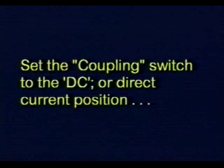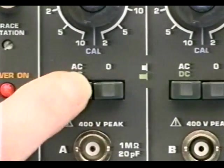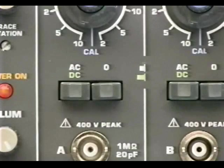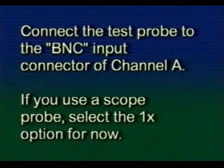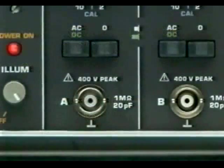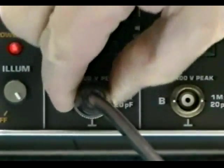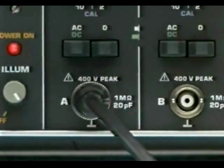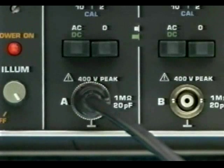Set the coupling switch to the DC or direct current position. Connect the test probe to the BNC input connector of channel A. If you use a scope probe, select the 1X option for now. You'll need to push and twist the BNC connector onto the front panel jack of the oscilloscope to ensure it is seated firmly and making good electrical contact.